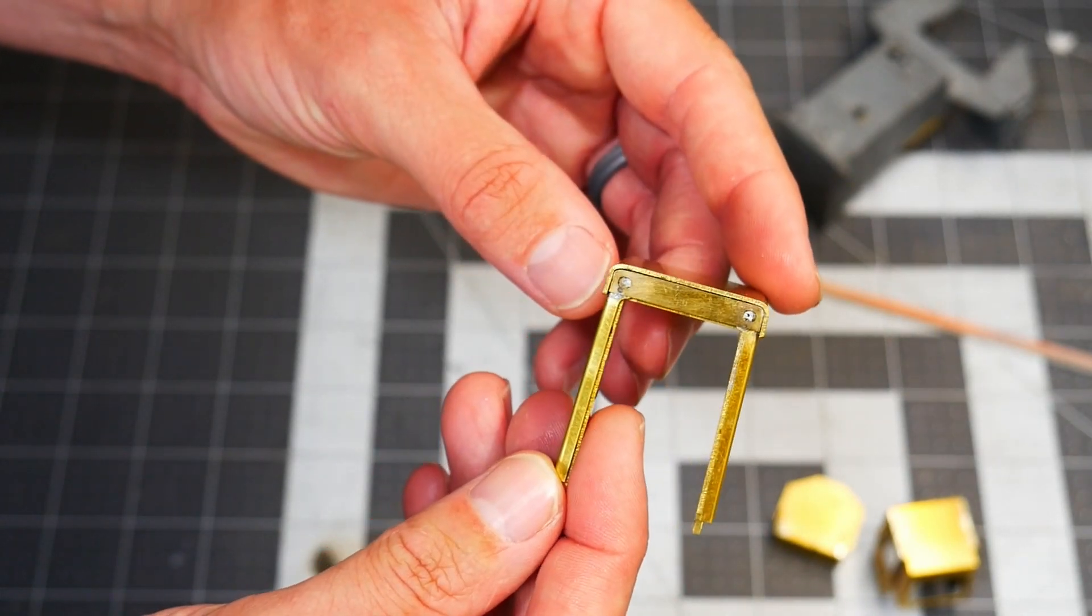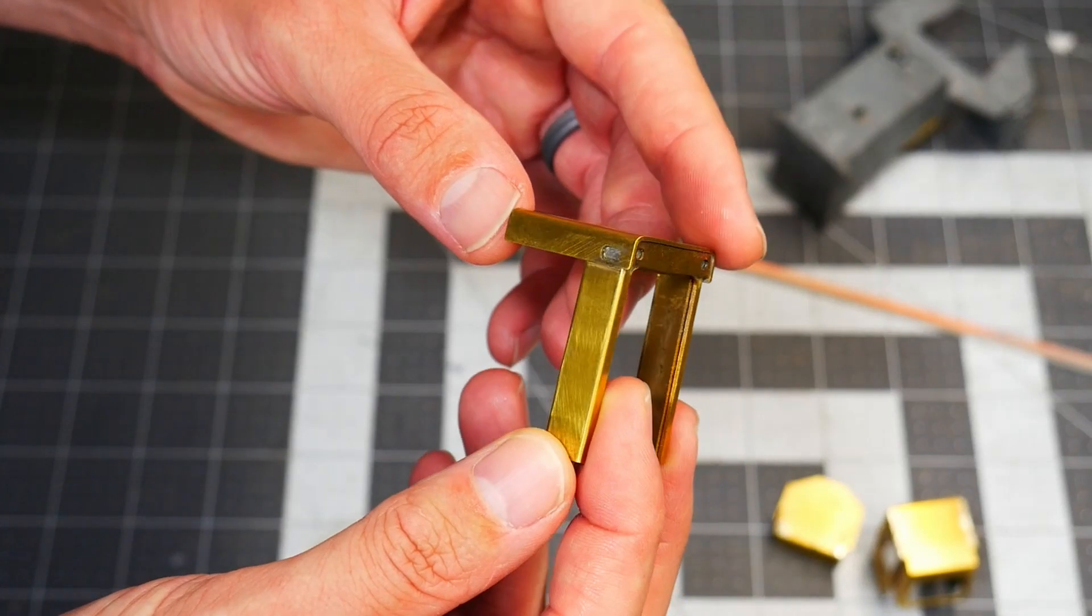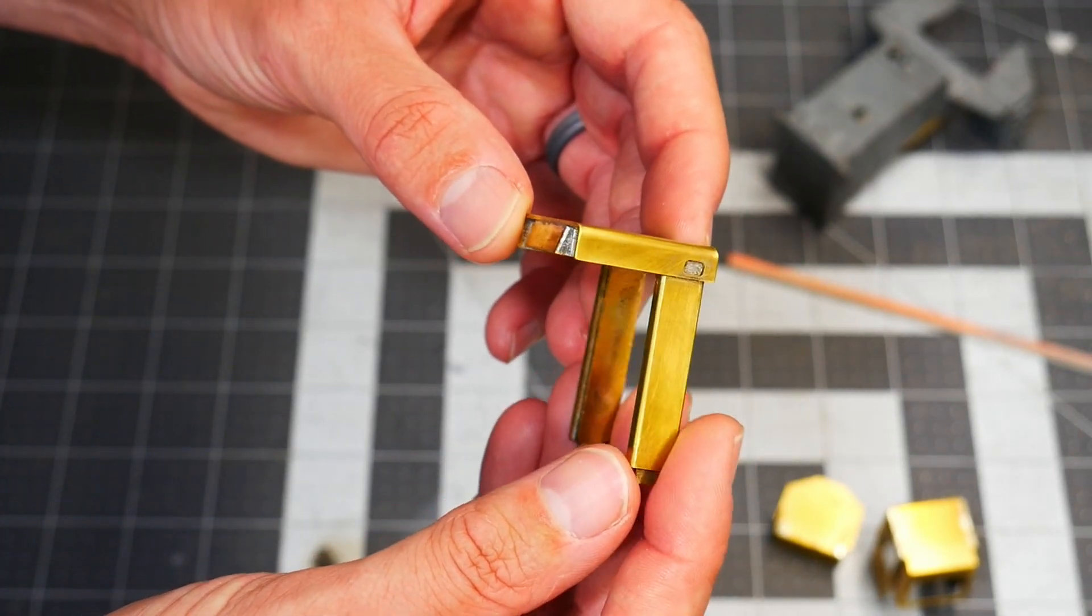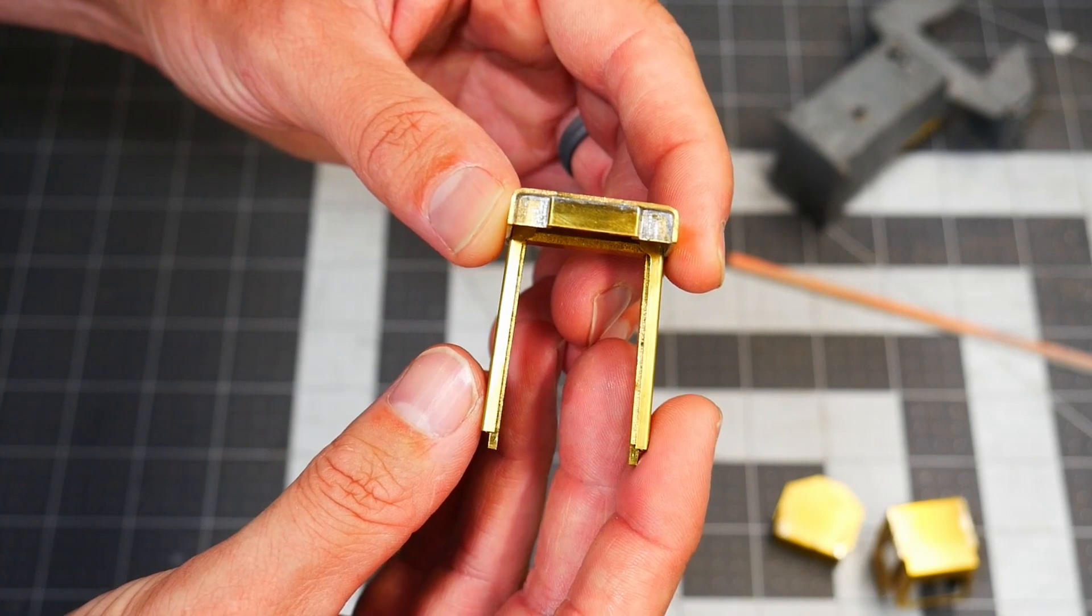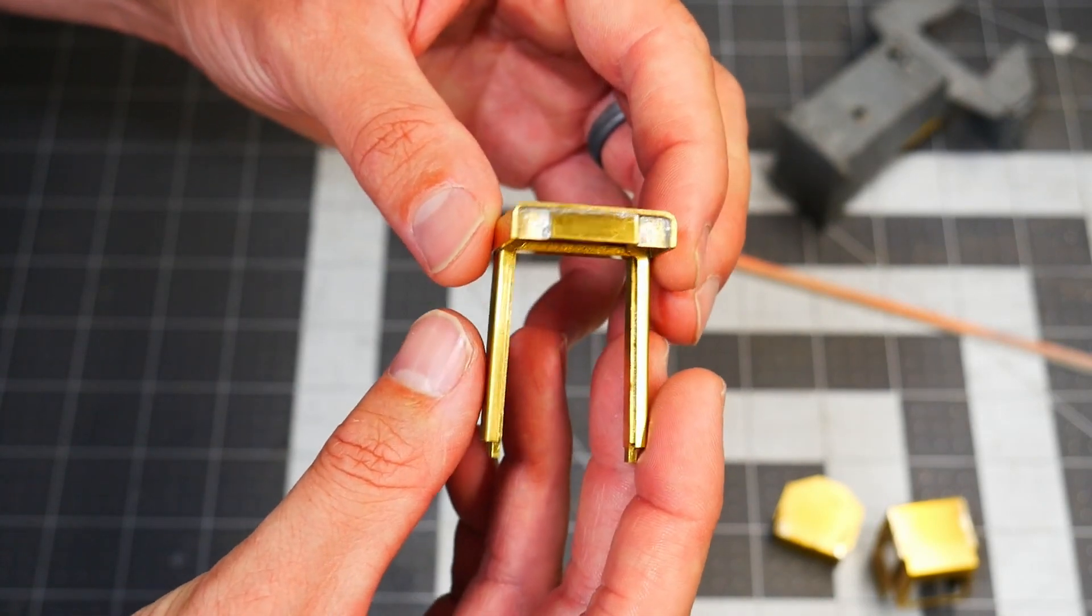But that's it. That is the rollover protection canopy for the 988F. I hope you enjoyed the video and I'll see you on the next one.